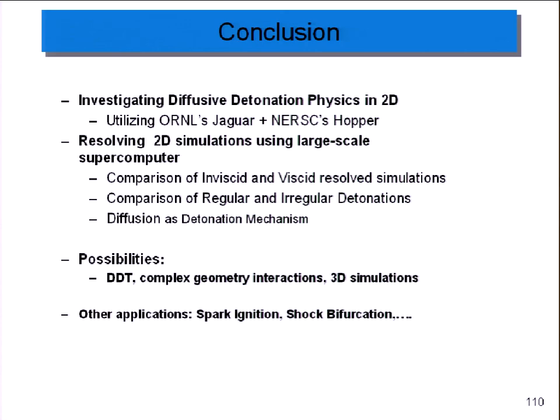In conclusion, I've been utilizing Oak Ridge's Jaguar, which I used to do the verification study, and NERSC's Hopper systems to look at diffusion and detonations. I've been resolving two-dimensional detonations with these large-scale computers. We compare the viscous and inviscid results and look at the differences between irregular and regular detonations. This is just the beginning. We're trying to understand the physics.